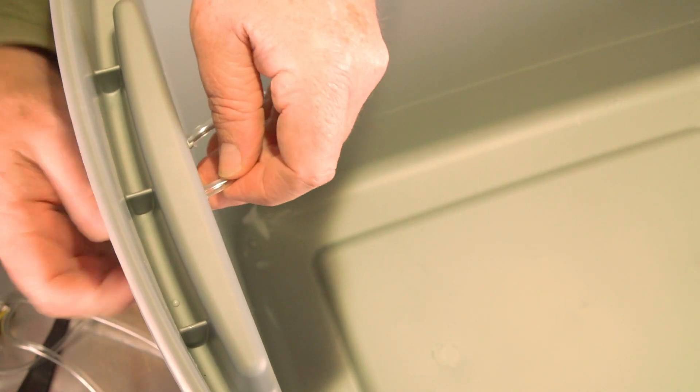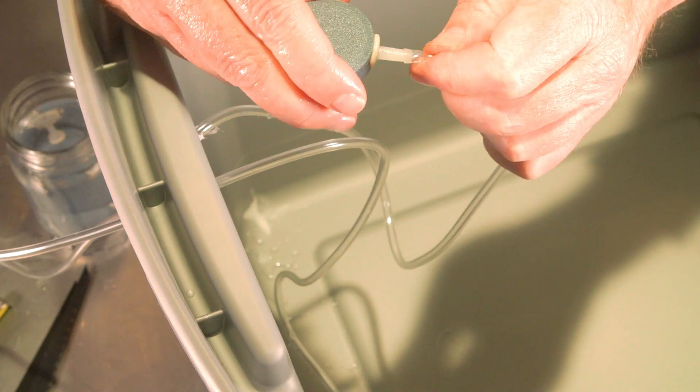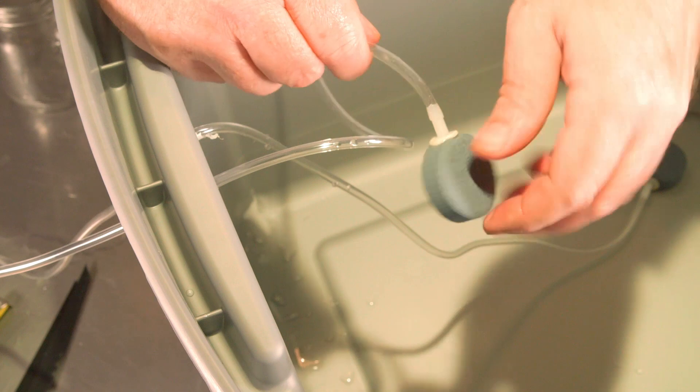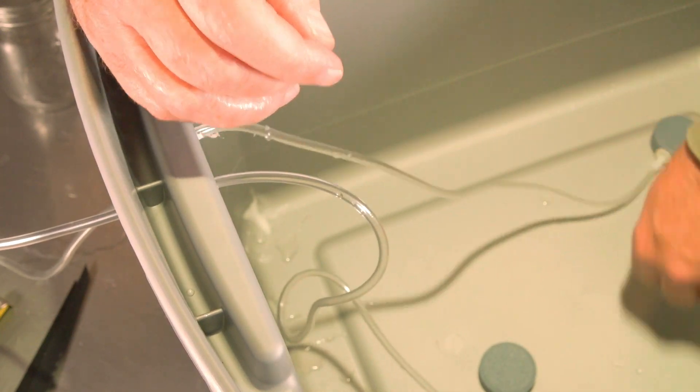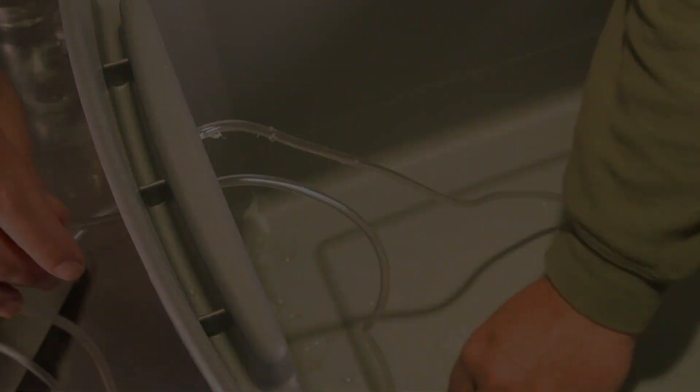And when it comes to putting the air stones inside of your bucket or your larger containers, I said you're going to probably want to put two inside of these containers, depending on what size container you use. And that is completely up to you. But these larger containers, I want to have about four plants in here and I want a bubbler on each side so that both sides get plenty of air.